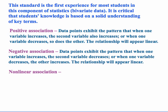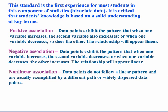A negative association exists when data points exhibit the pattern that when one variable increases, the second variable decreases, or when one variable decreases, the other increases — they do the opposite. This association will also make the relationship appear linear.